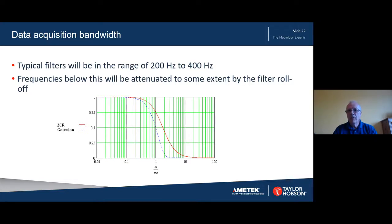The cutoff frequency is a very useful parameter for characterizing filters but it doesn't tell us the full story of how the filter is going to affect any particular frequency. This is because filters have a roll-off characteristic. Two common roll-off characteristics, the 2CR filter and Gaussian filter, are shown here. As you can see, for both filters the roll-off is significant down to about one tenth of the cutoff frequency.